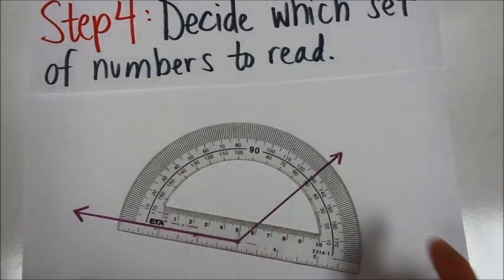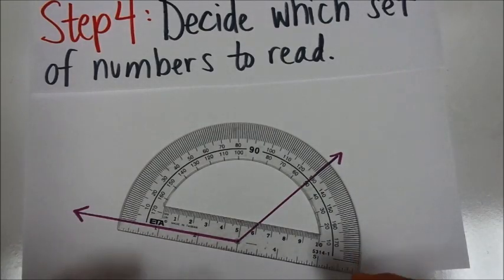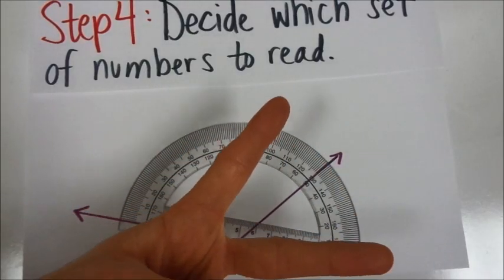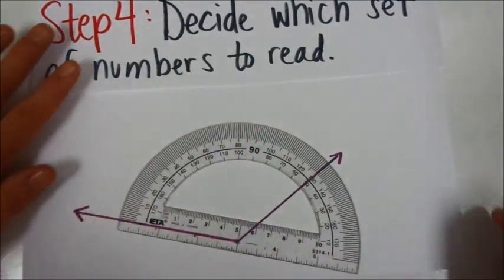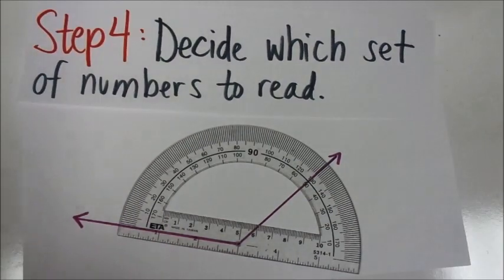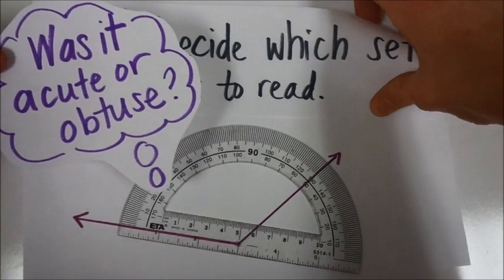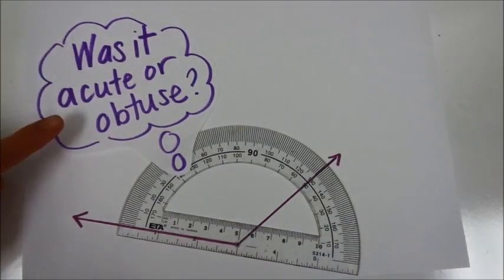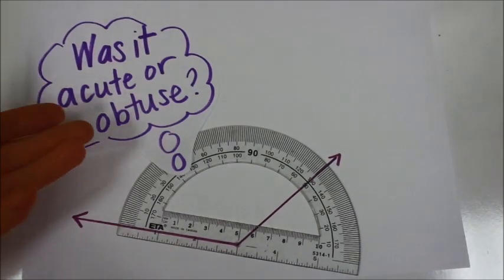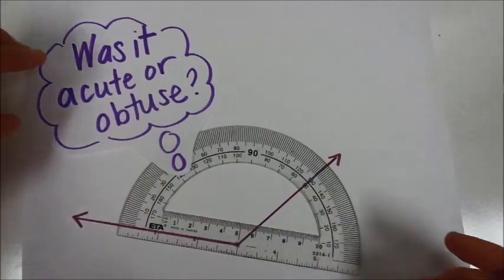There are pairs of numbers so that you can use the protractor in either direction. You can measure an angle going this way or you can measure an angle that opens up this way. Either way, you can use the same protractor to measure the angle. One way that you can figure out which set of numbers to use is to go back and think about was this angle that you are measuring acute or obtuse.